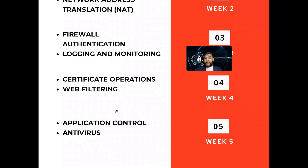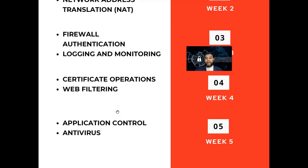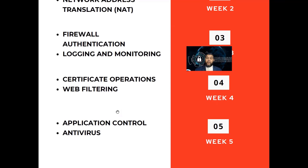In the fourth week, we'll talk about certificates and operations, like certification authority. If you want to have a centralized public key infrastructure and enable certification authority, we'll show how to do that. This mainly provides CIA — confidentiality, integrity, and authentication. We'll also talk about web filtering, so if you are accessing the internet, you know which sites should be allowed and which should be blocked.